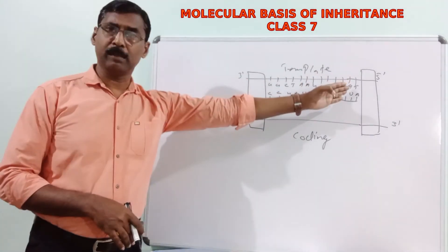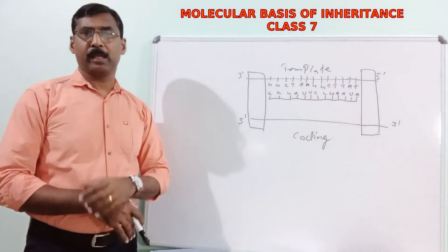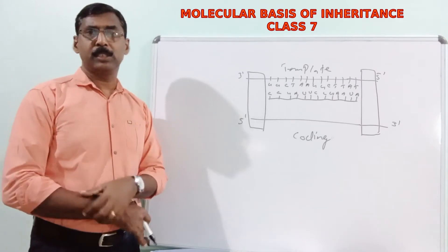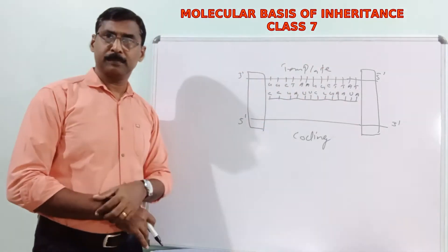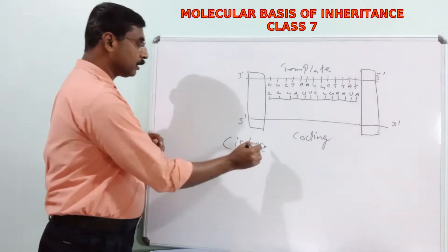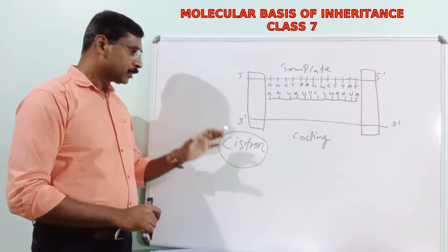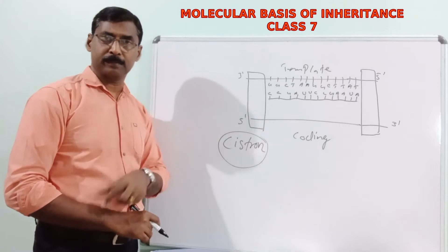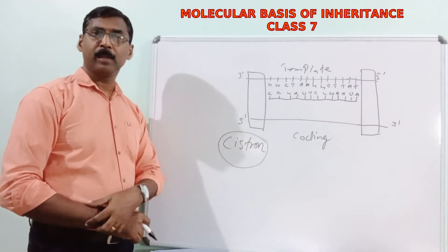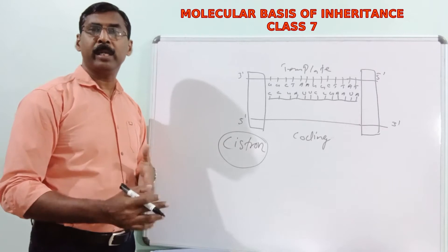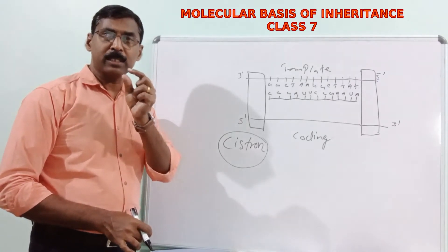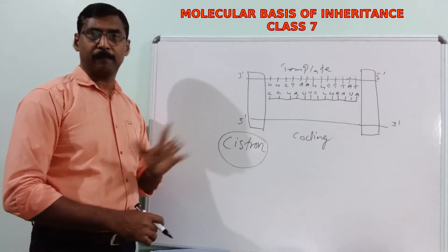We call this unit a cistron. A cistron is the portion of a DNA strand — a small segment of a DNA strand — from which an mRNA is transcribed. If you have a small region from which an mRNA is transcribed, we call it a cistron.